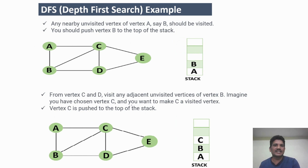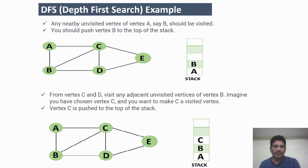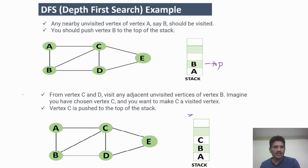The unvisited adjacent vertices of A are B and C. I visited B, and once you visit B, you push it into the stack. B is now the top of the stack. A has been visited and B has also been visited. The other adjacent vertices of B are D and C — you can visit any one of them.